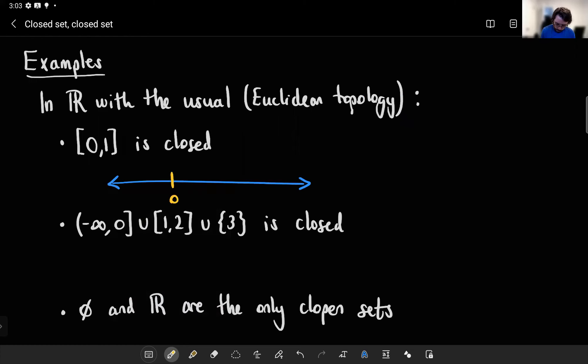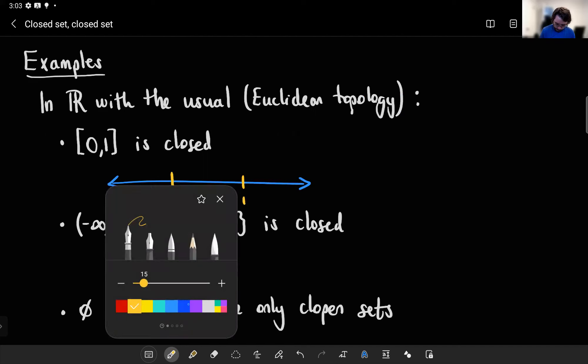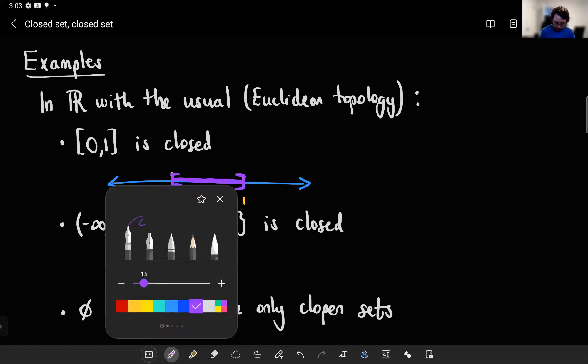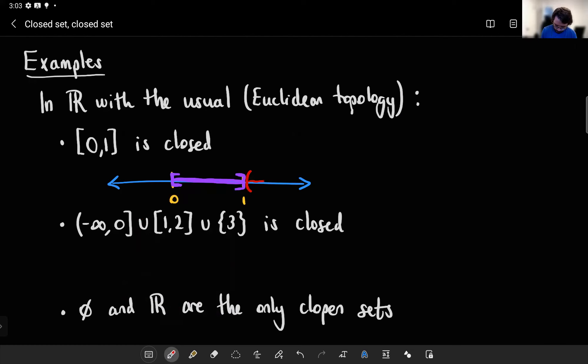This is the real number line. Let's say here's 0, here's 1. Then the set we're working with is this thing. Put a little closed brackets on it so we know we're including the endpoints. That's the closed interval from 0 to 1, and it's closed because its complement is open. So all you have to think of is, oh, its complement would be everything else.